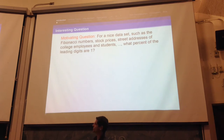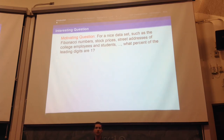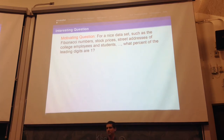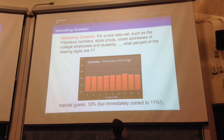Let's start with a motivating question. For a nice data set — and as a mathematician, nice includes things like Fibonacci numbers, stock prices, street addresses of college employees and students — what percent of leading digits are 1? I want somebody who doesn't know anything about Benford's Law to guess. What would you say is the probability of a first digit being 1? The first naive guess: 10%. And then you correct to 11%, because we're not going to have a leading digit of zero. So the natural guess is something like 10% or 11%.